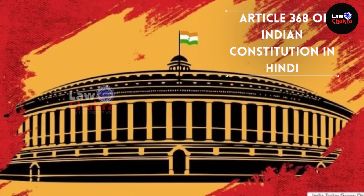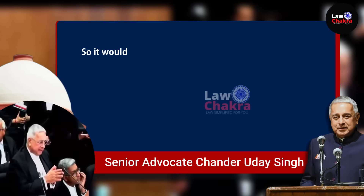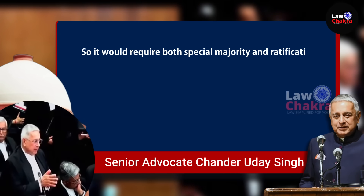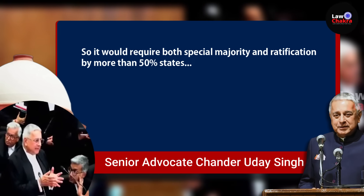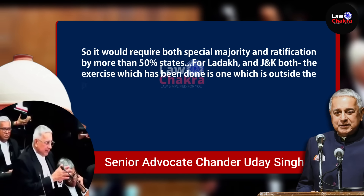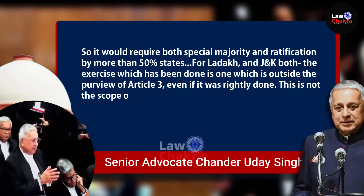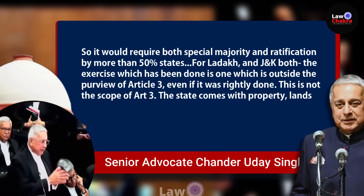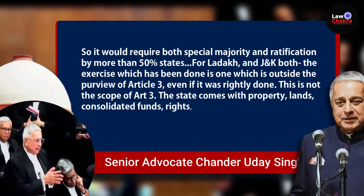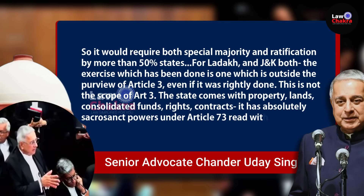Singh ने suggest किया कि अगर state को union territory में convert करना ही है, तो ये सिर्फ Article 368 of the Indian Constitution के तहत ही हो सकता है। इस context में उन्होंने कहा: 'So it would require both special majority and ratification by more than 50% states, for Ladakh and Jammu and Kashmir both। The exercise which has been done is one which is outside the purview of Article 3, even if it was rightly done। This is not the scope of Article 3 — the state comes with property, lands, consolidated funds, rights, contracts — it has absolutely sacrosanct powers under Article 73 read with Article 2।'